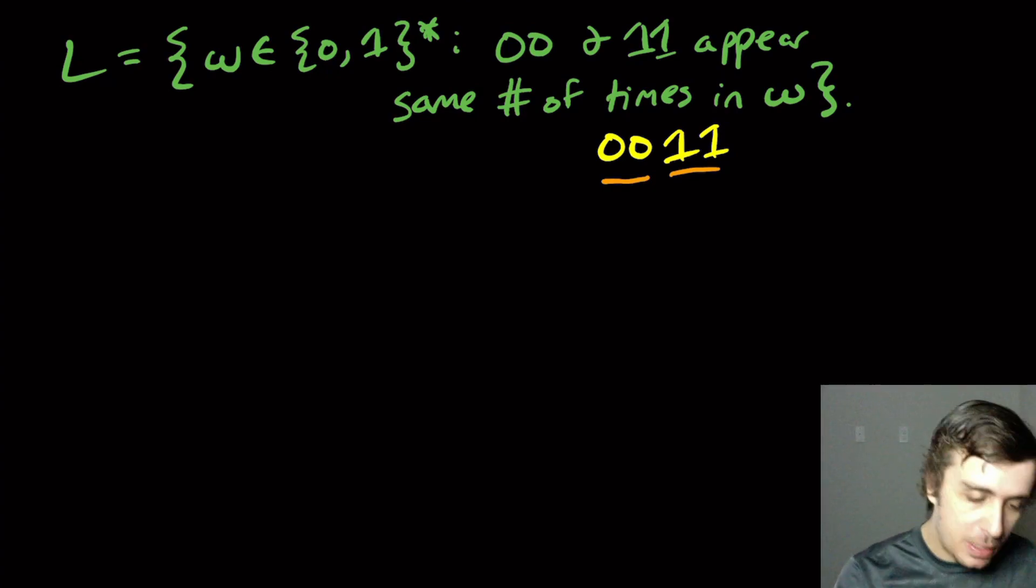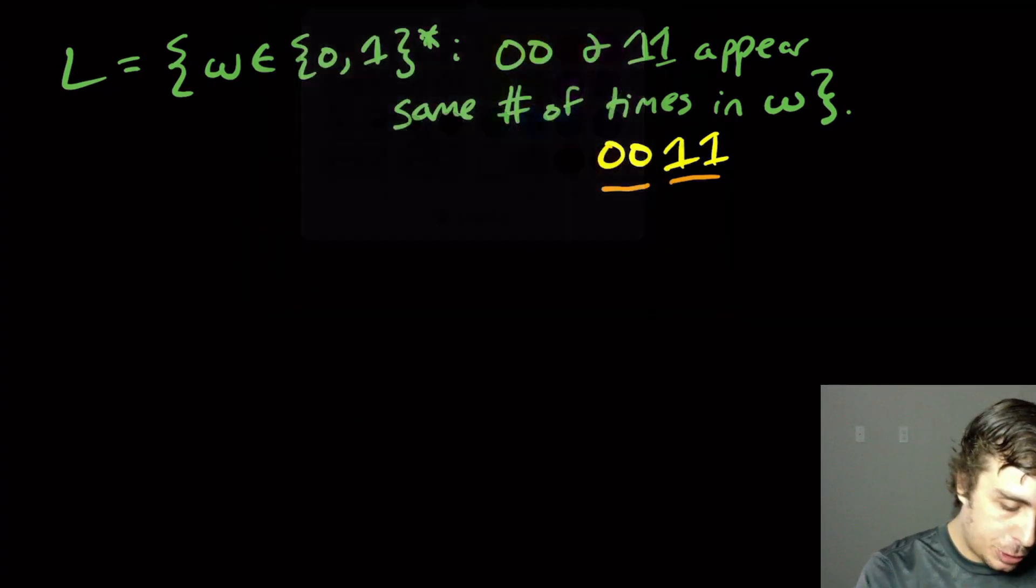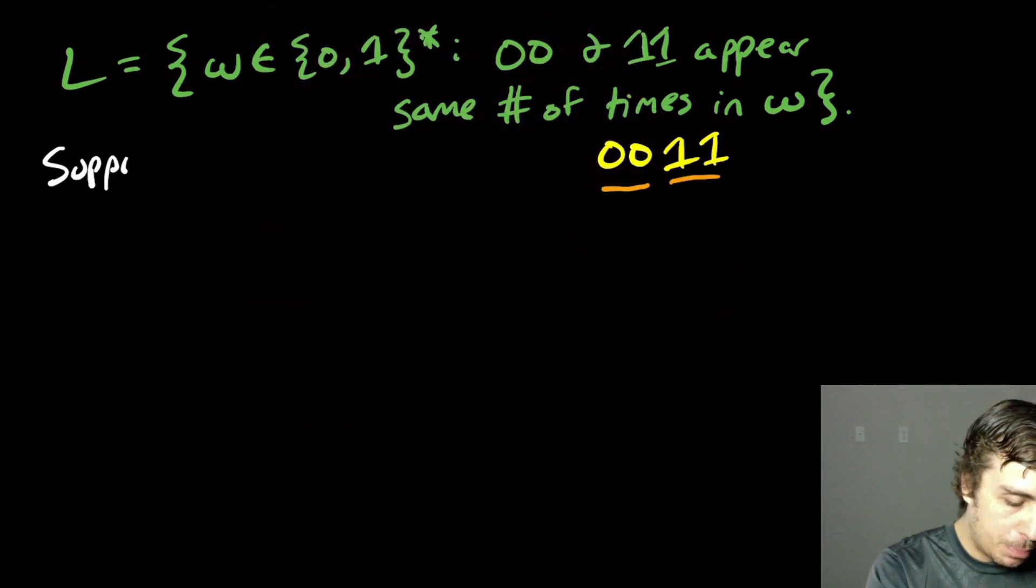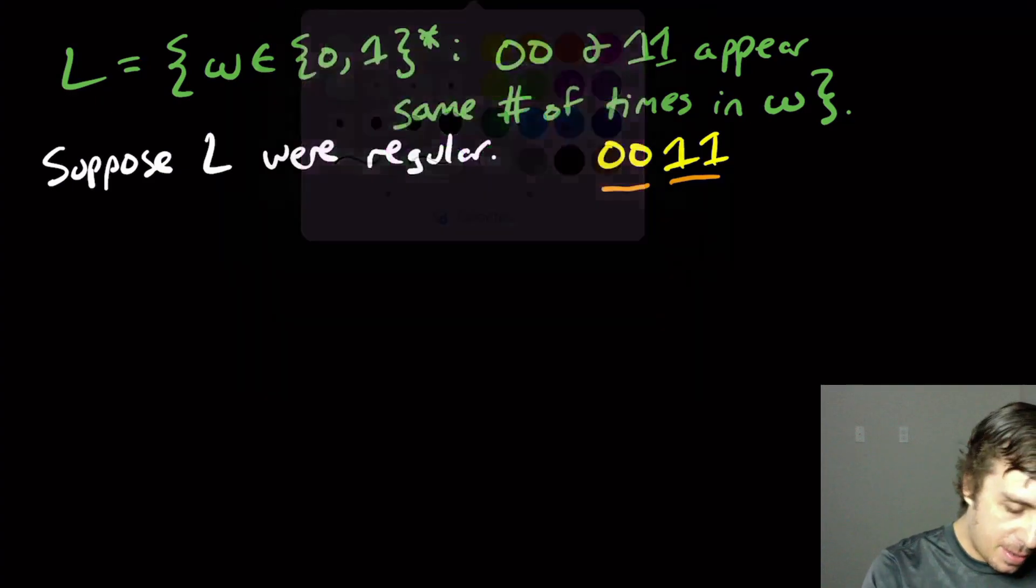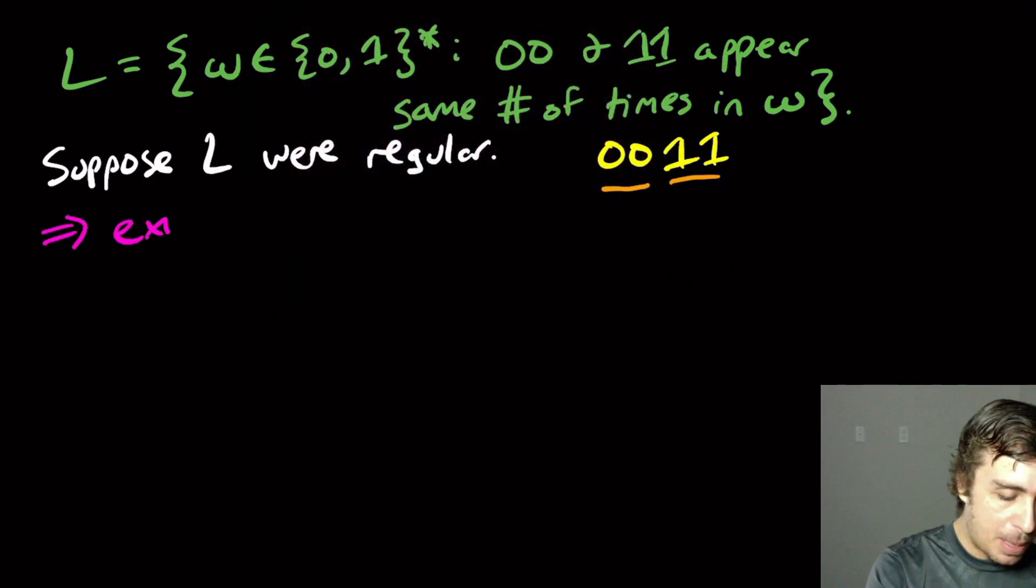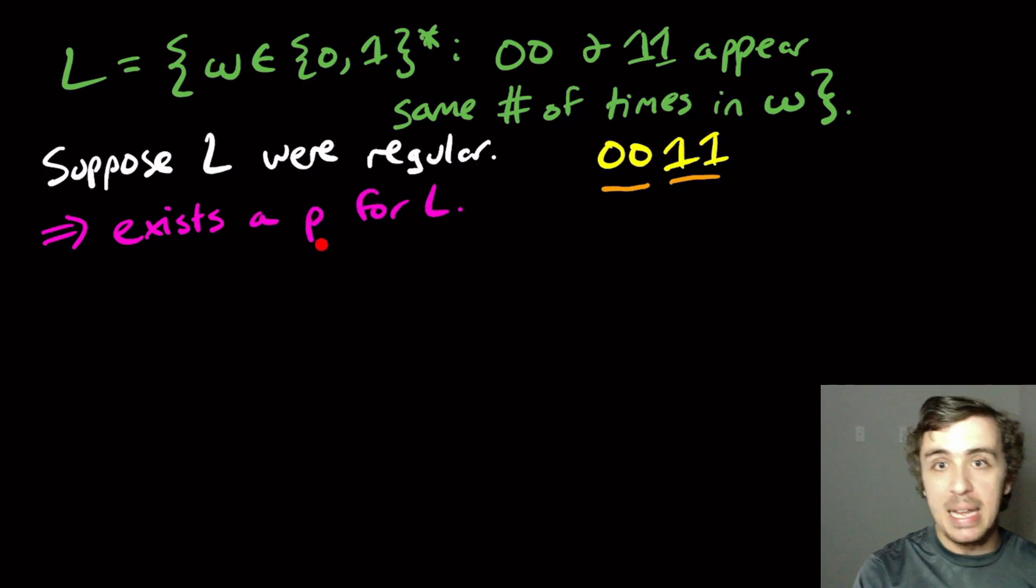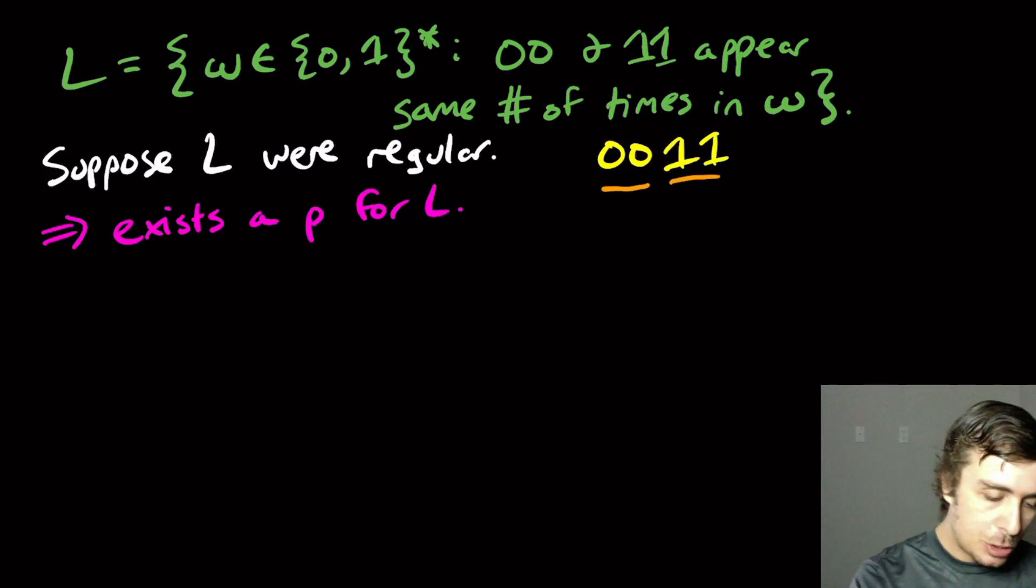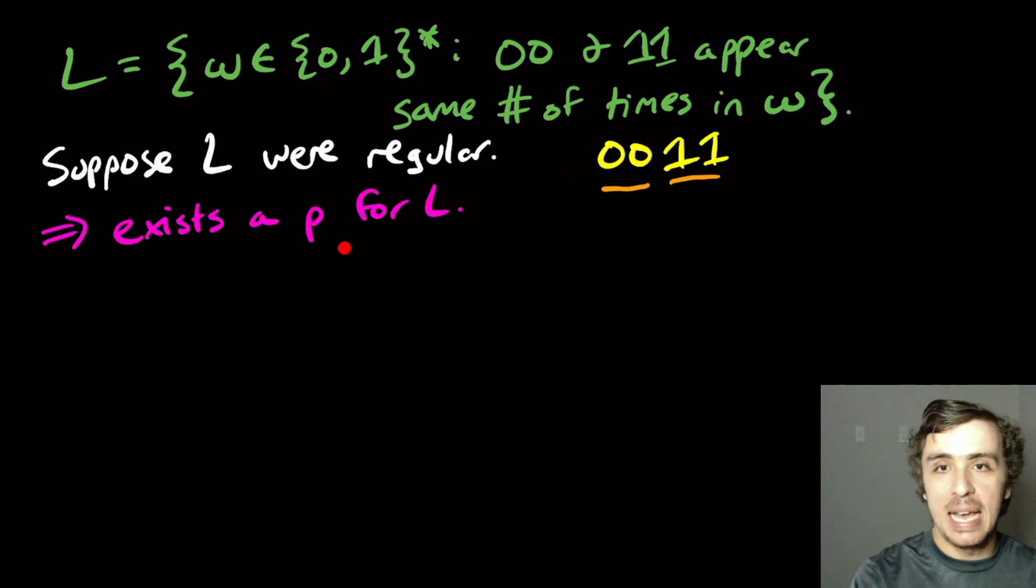So let's prove that this thing is not regular. As always, we need to suppose that L were regular. Then that means there exists a pumping constant P for L. We need to find a string that is in the language and has length at least P.